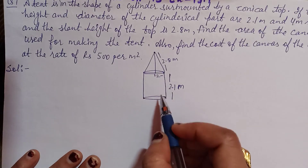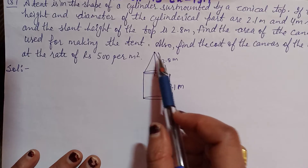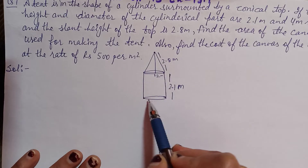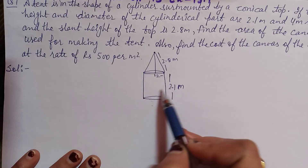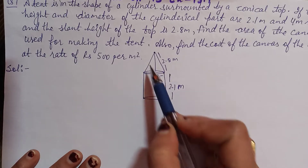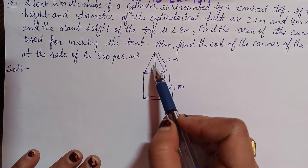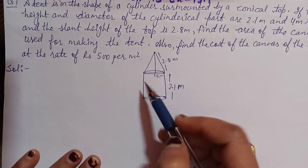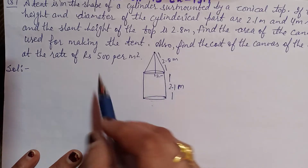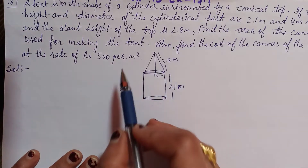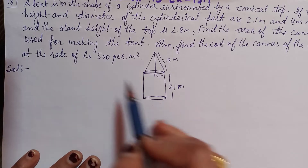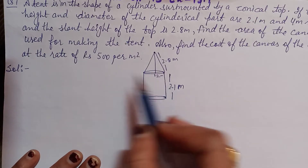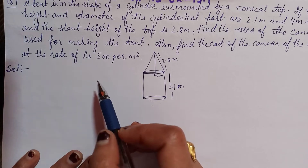You are asked to find the area of the canvas. The bottom has no canvas — canvas is used only on the upper part. So it is the curved surface area of the cylinder plus the curved surface area of the cone. Add both and the area of canvas is obtained. Also, 1 meter canvas costs Rs. 500, so we also need to find the cost.